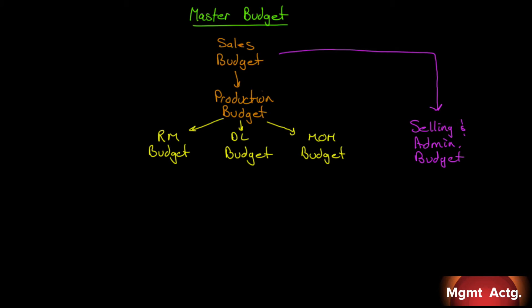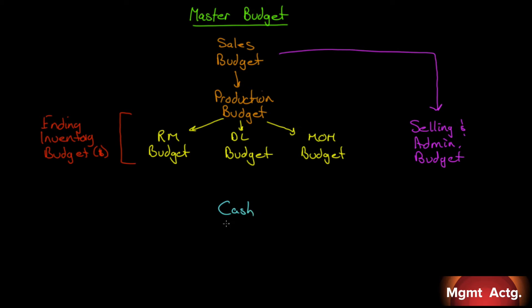Once we have this, here's six budgets out of the ten done. Once we have this, we're in a position to do the ending inventory budget. Why? Because we need a dollar value for the ending inventory. But to get a dollar value for the ending inventory, we've got to know how much in raw materials went into each unit, how much of direct labor, how much of manufacturing overhead. So the ending inventory budget is driven by everything after the production budget.